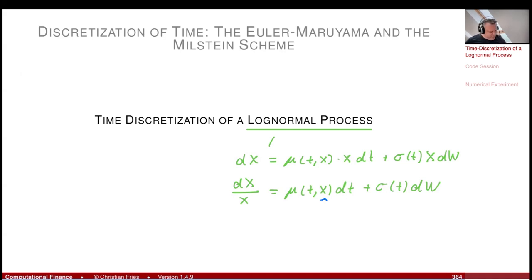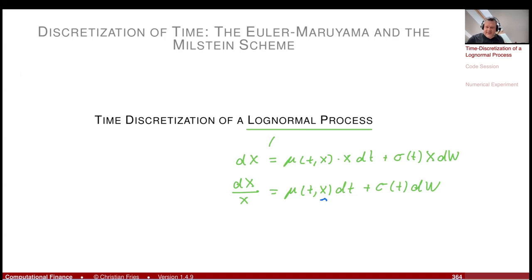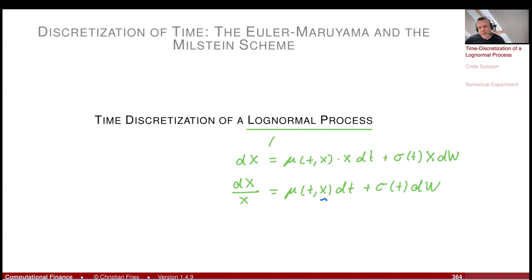But if you know, for example, that the sigma is now a constant or piecewise constant, then you can at least reduce the discretization error from the stochastic integral. We may still have a discretization error in the Lebesgue integral part, but we can fix the discretization error in the stochastic part. The original log-normal LIBOR market model — the Black model — is of this form.